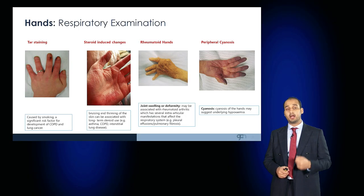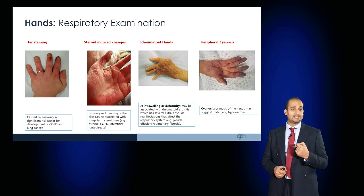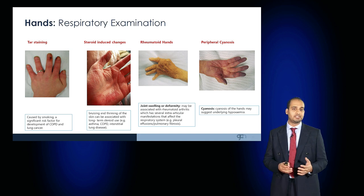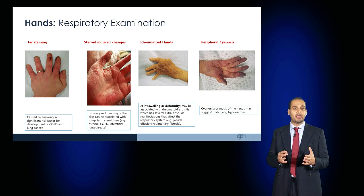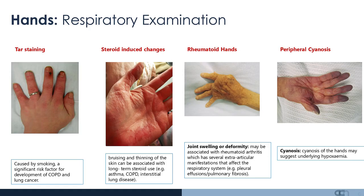Look for the presence of tar staining — cigarette smoking is a major risk factor in the development of COPD and lung cancer. Assess for steroid-induced changes; patients with chronic respiratory conditions may require chronic courses of steroids, resulting in iatrogenic cushingoid features such as thin skin and bruising. Also look for other conditions such as rheumatoid hands, where the patient may have ulnar deviation and a symmetrical deforming arthropathy, which can be associated with pleural effusions as well as pulmonary fibrosis.